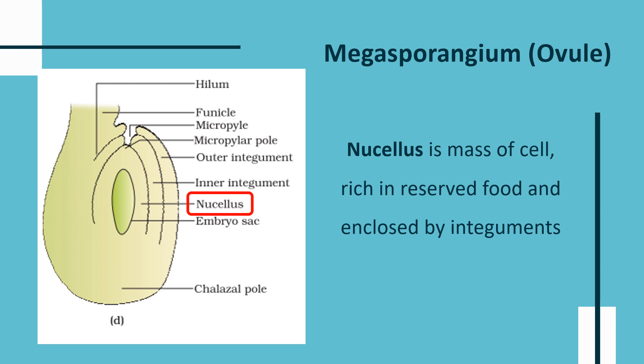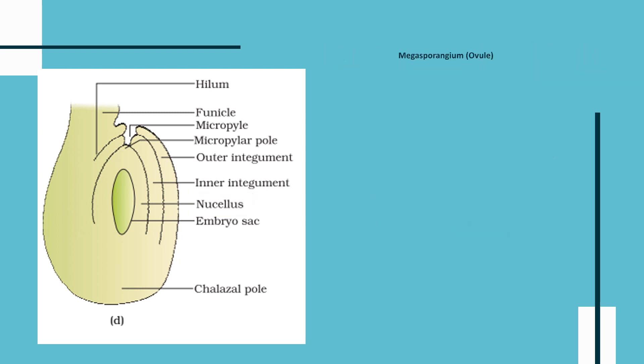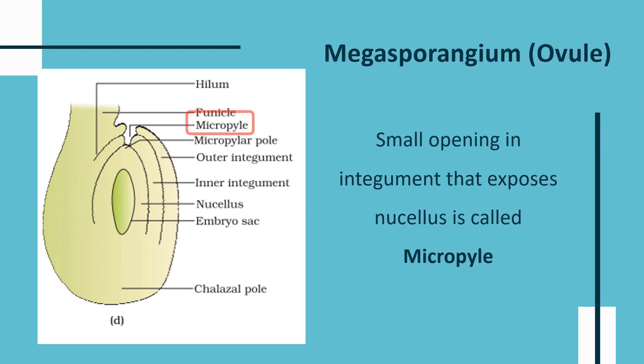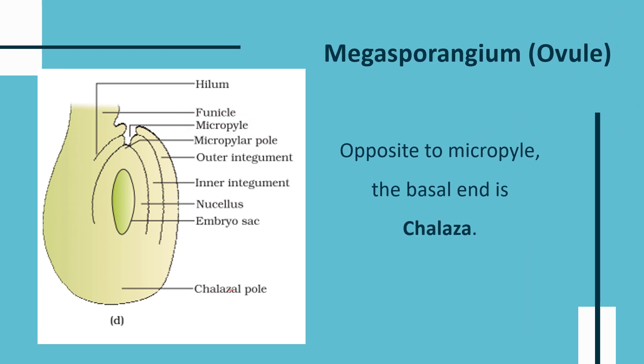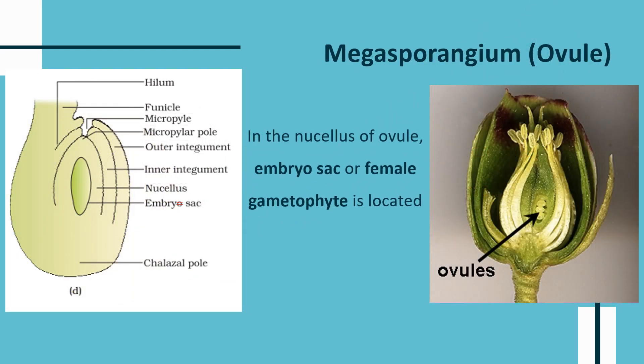Integuments completely enclose a mass of cells rich in reserved food material, known as nucellus. There is a small opening in the integument that exposes the nucellus, known as micropyle. The region where the micropyle or opening is present is known as the micropylar pole. Opposite to the micropyle there is a basal end known as chalaza. In the nucellus of the ovule, the embryo sac or female gametophyte is located.